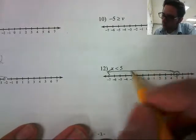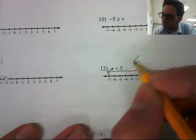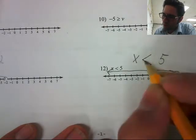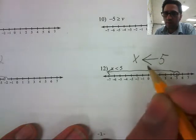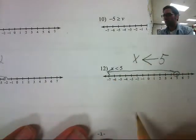We can also use the memory trick that I taught in class, as long as your variable is on the left. x is less than 5. Draw a line from the point of the inequality to make it an arrow. And look, it's an arrow that points to the left. All numbers less than 5.